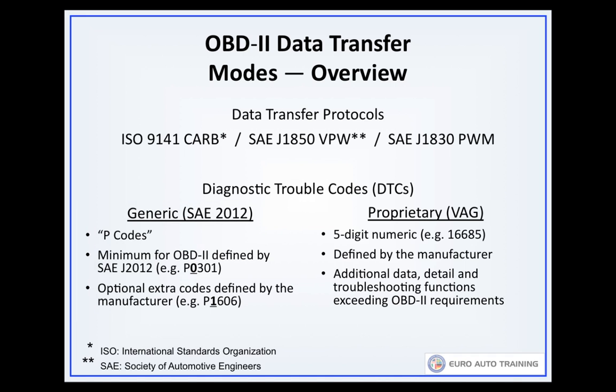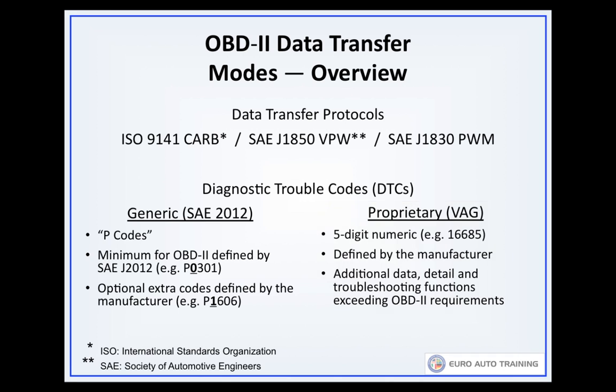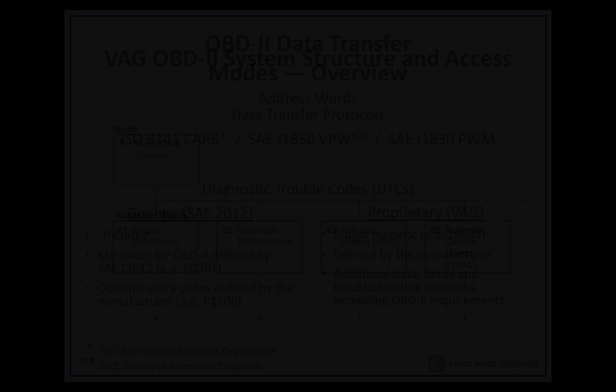The Volkswagen and Audi proprietary system uses DTCs indicated by five numerical digits defined by the manufacturer, which may offer more information than OBD2 requires.